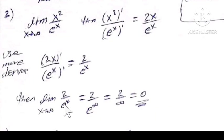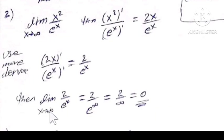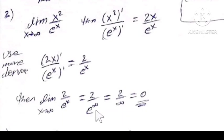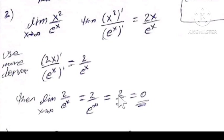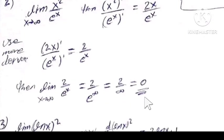Now 2 over eˣ as x approaches infinity: the denominator eˣ becomes a very large number — e to the power of infinity is infinity. So 2 divided by infinity equals 0.